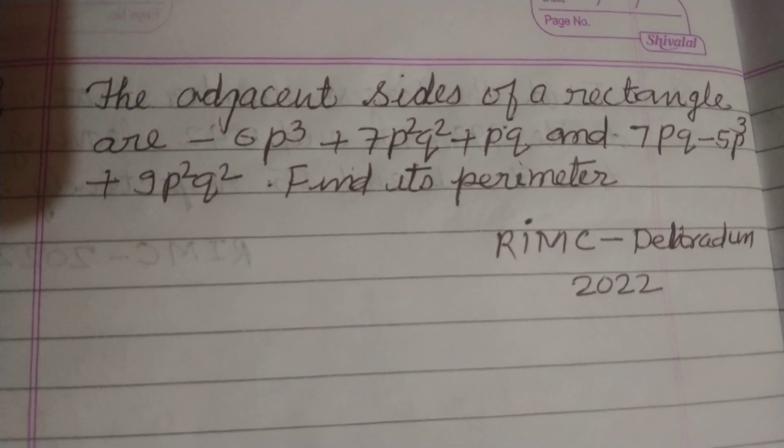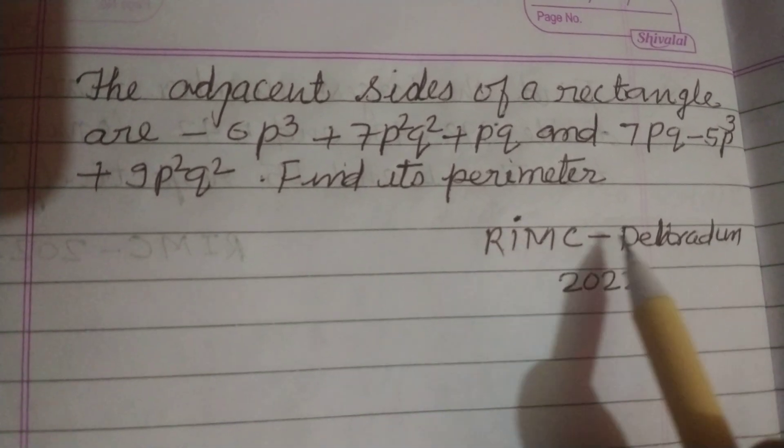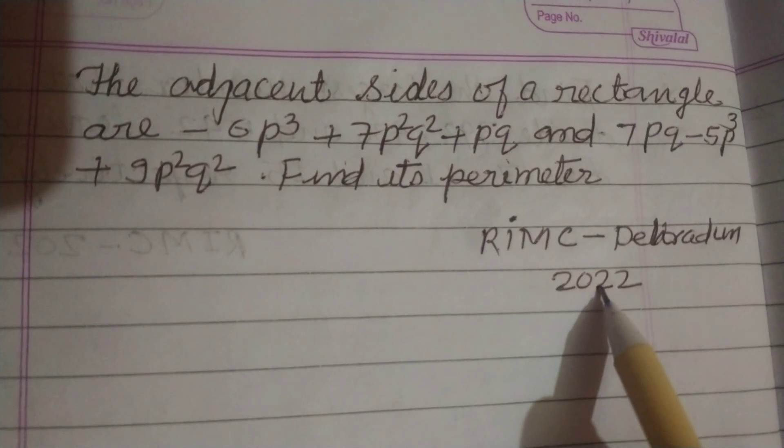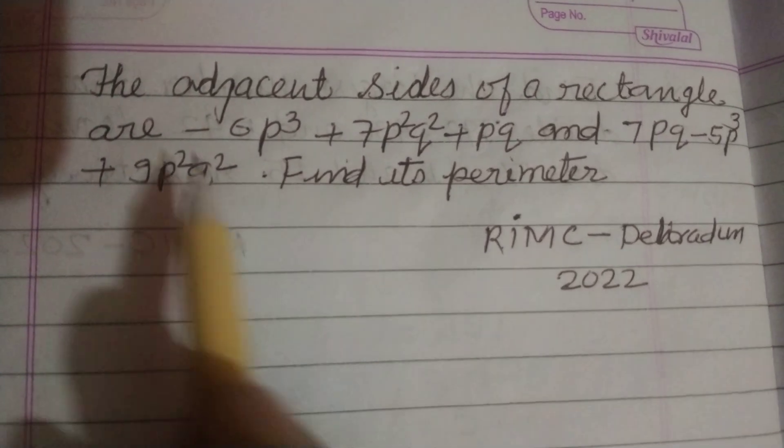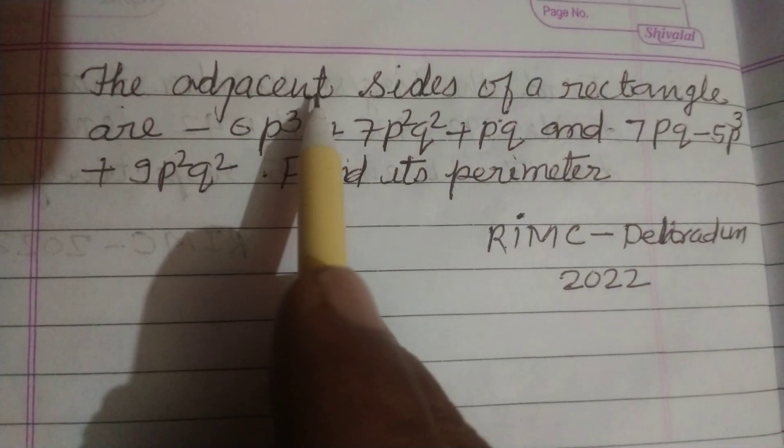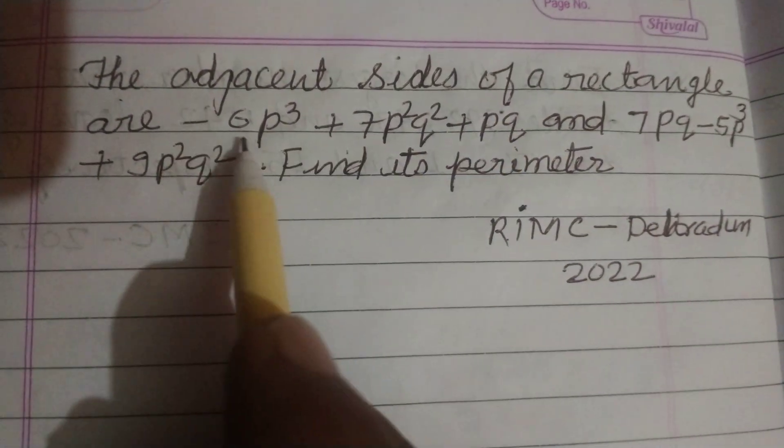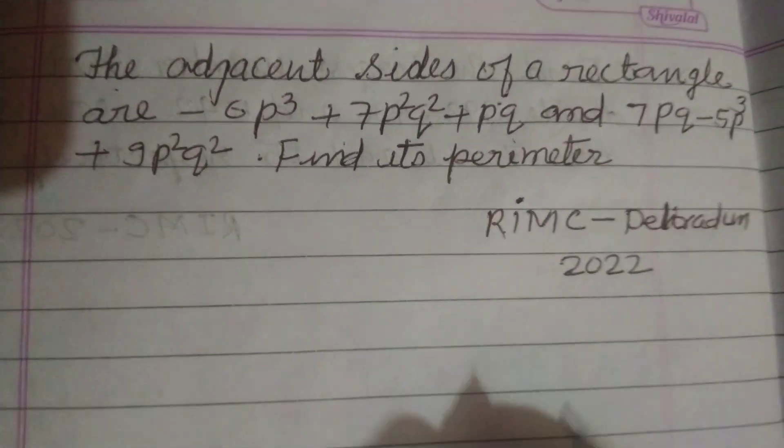Hello students and welcome to this YouTube channel. RIMS Dehradun December 2022 question: The adjacent sides of a rectangle are given, find the perimeter.